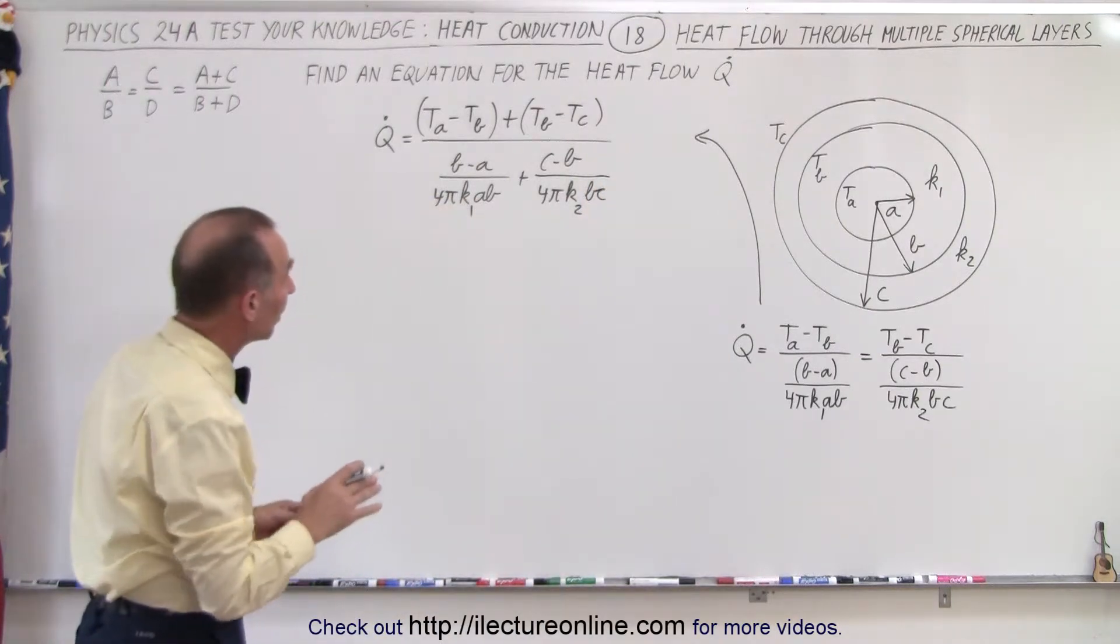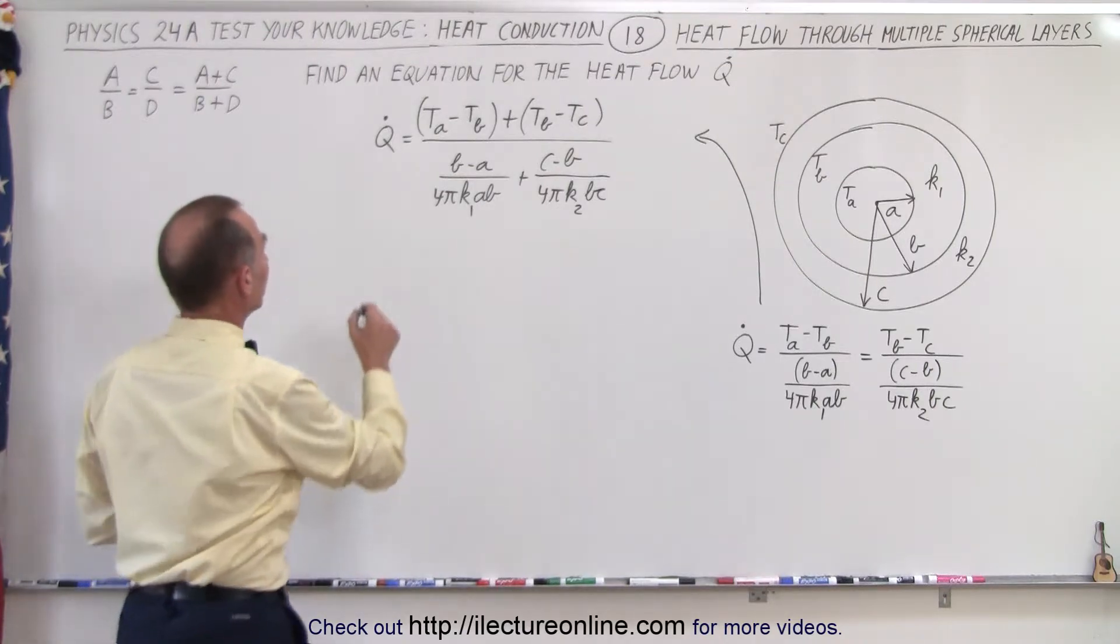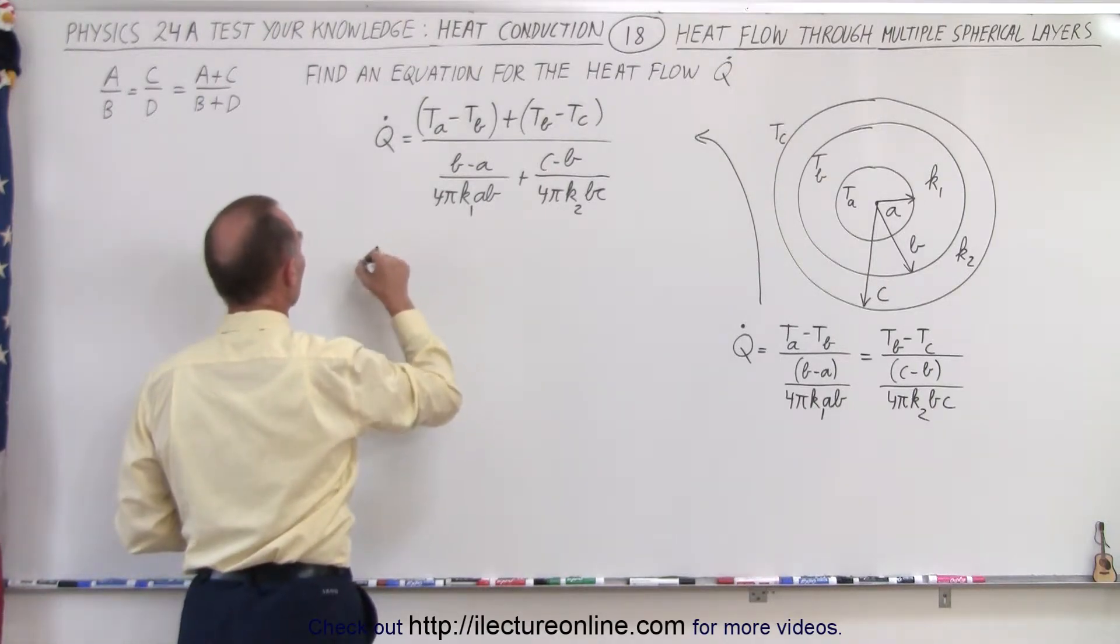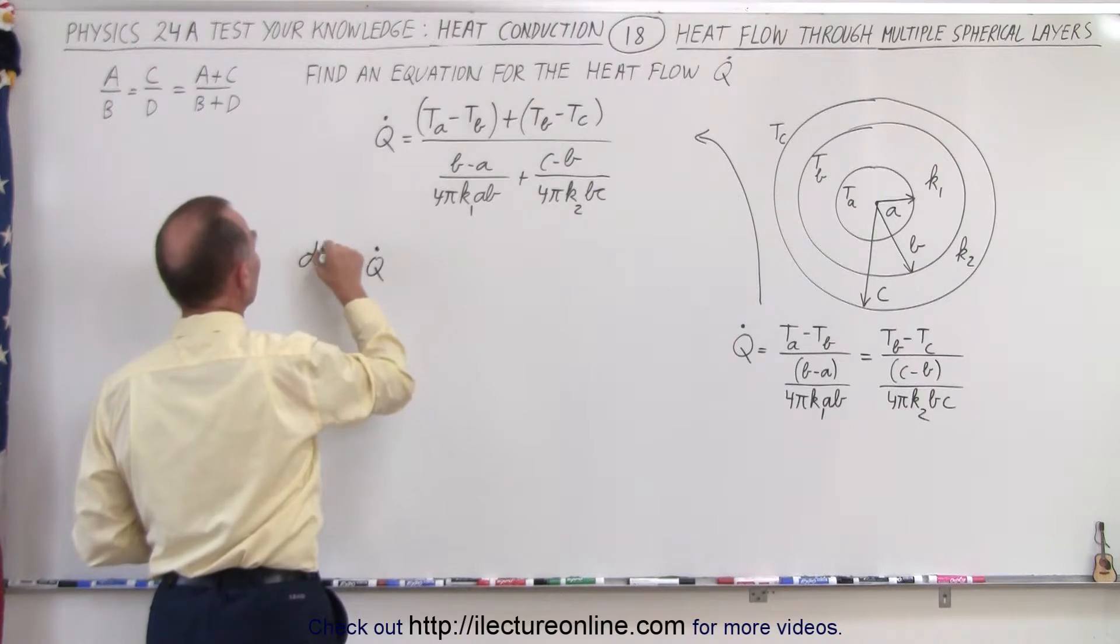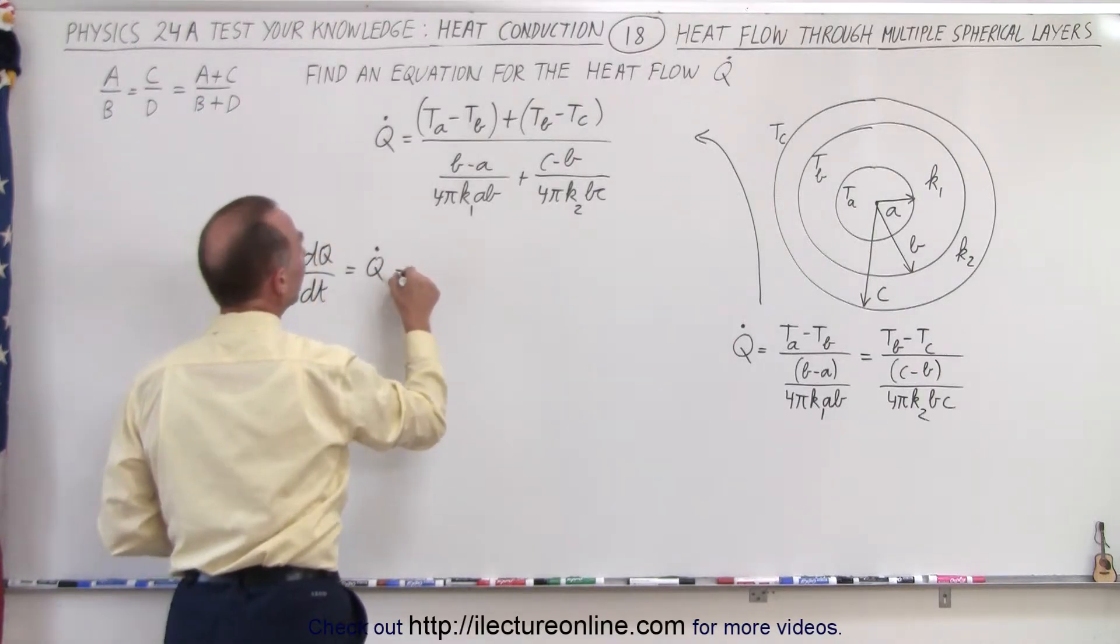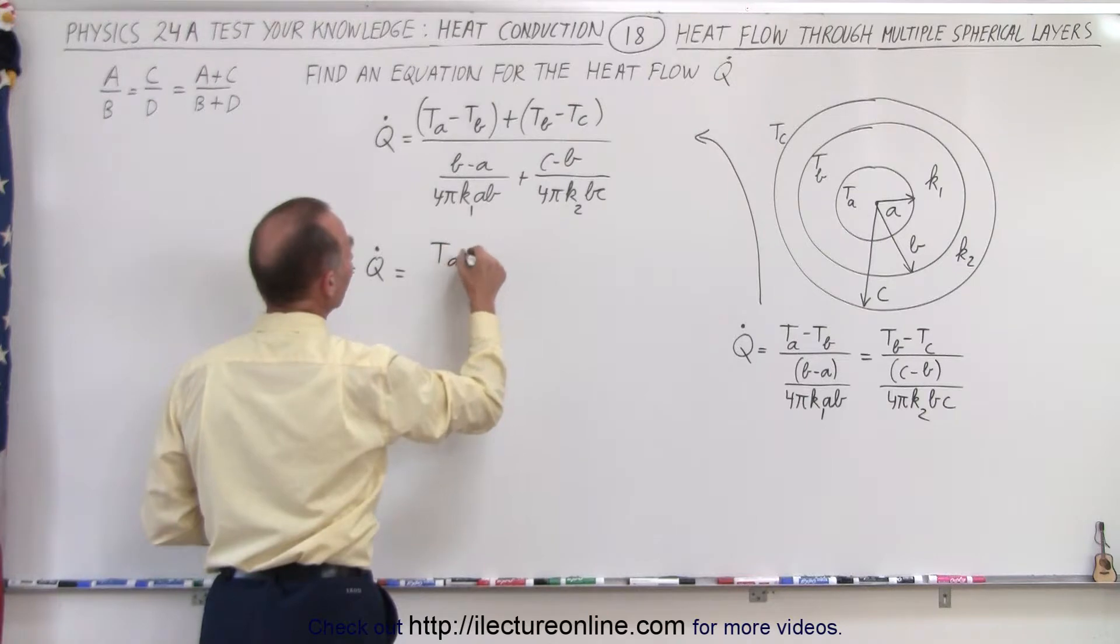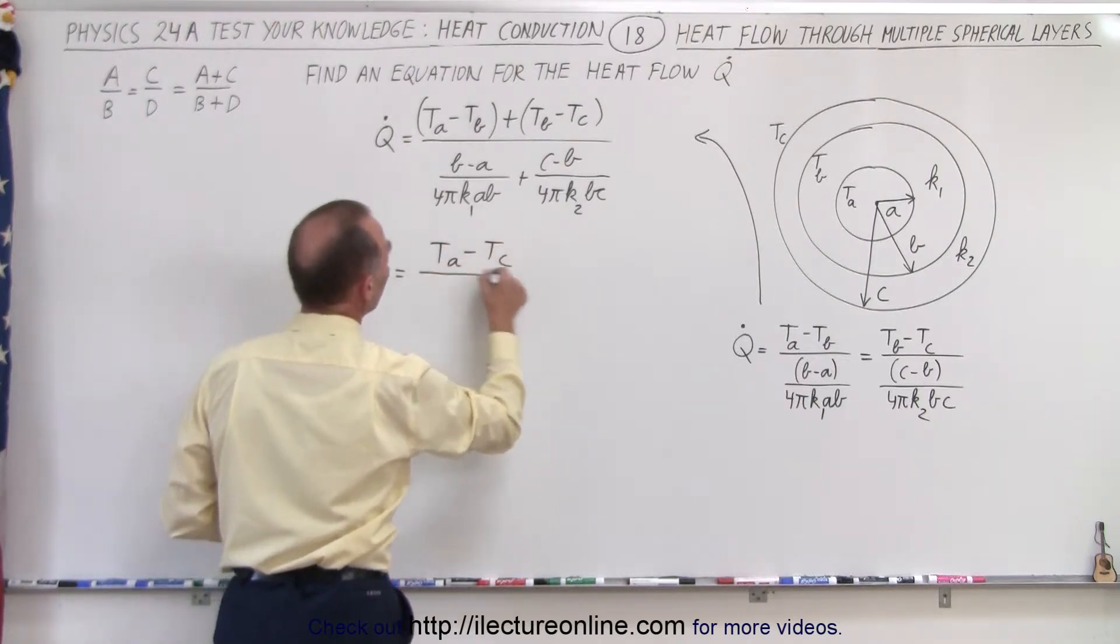Now notice in the numerator, the T sub B's cancel out, which means that Q dot, which of course is equal to dQ/dt, is equal to TA minus TC in the numerator, meaning the difference in the temperature between the outside and the inside.